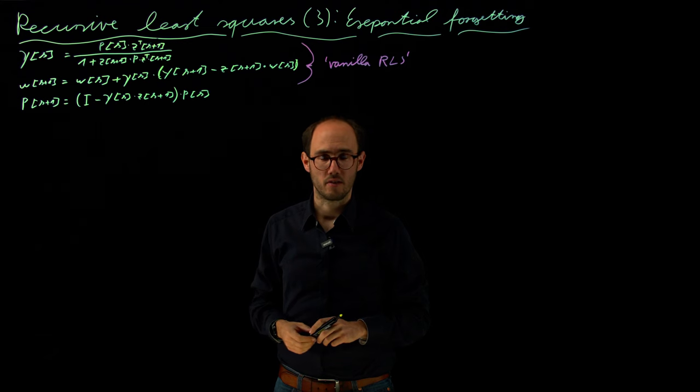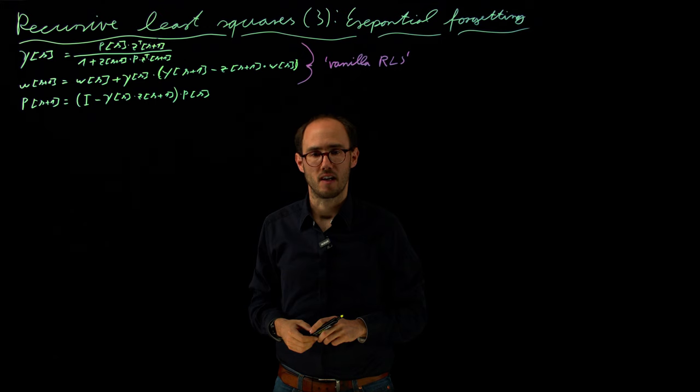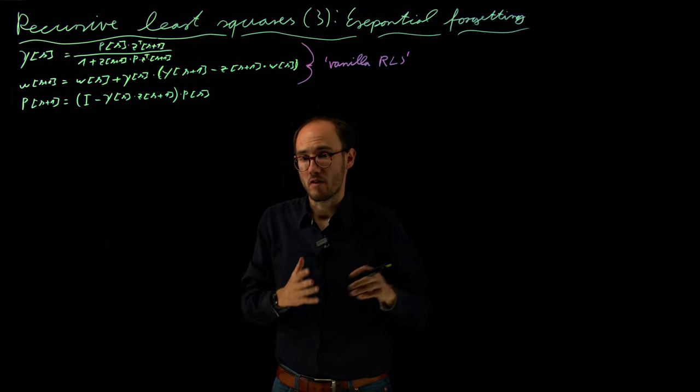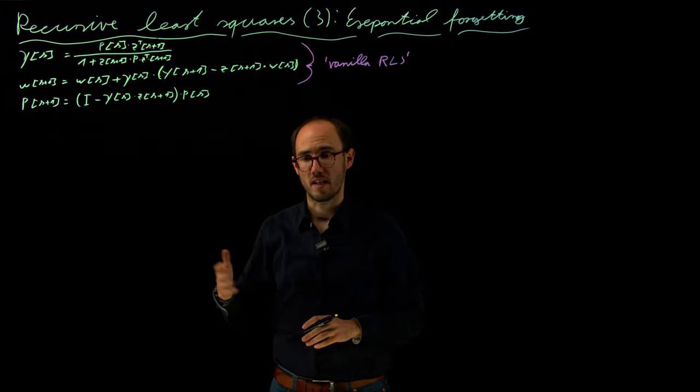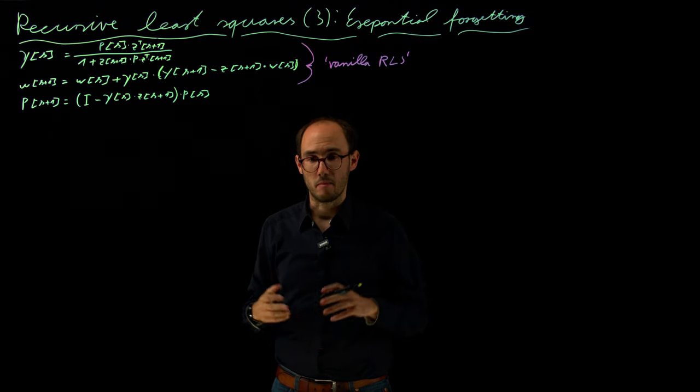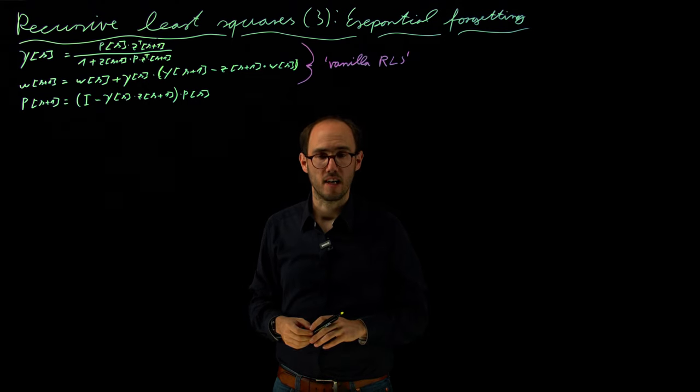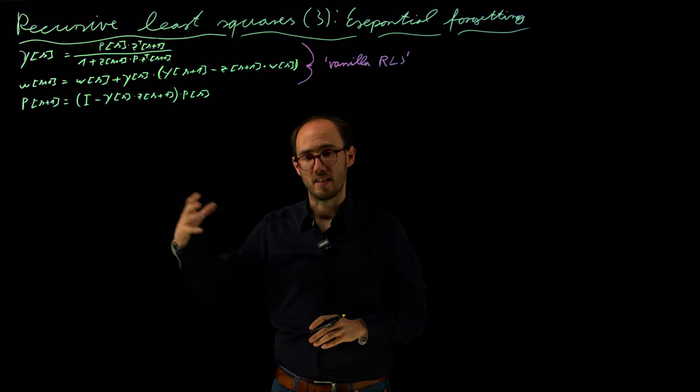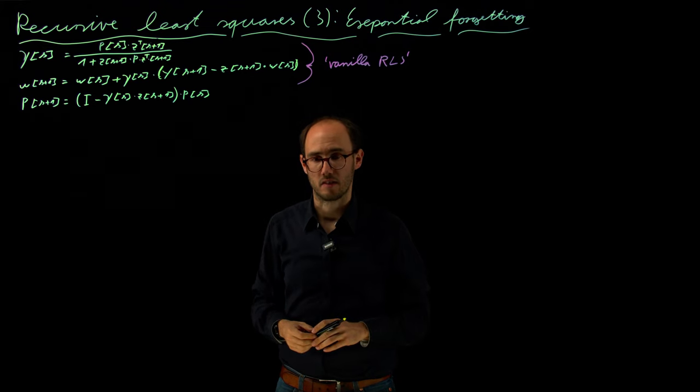However, in a recursive least squares estimator, sometimes it's beneficial to forget something over time, because if you utilize this estimator for a very long time, let's say you have this actively running on some embedded computer for days, weeks, or months monitoring some technical system, then maybe the system itself changes its properties slowly over time, and therefore it might be interesting to forget about data which we have obtained months ago because the system nowadays has some different characteristics.